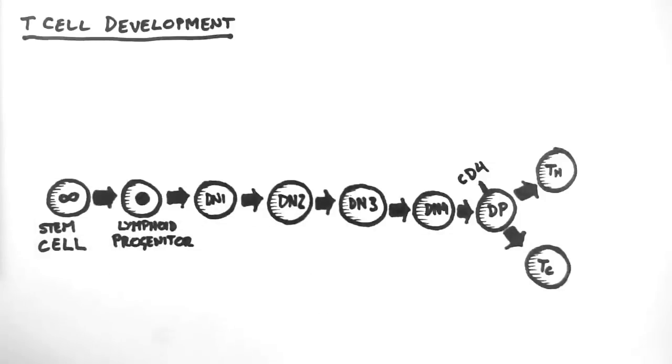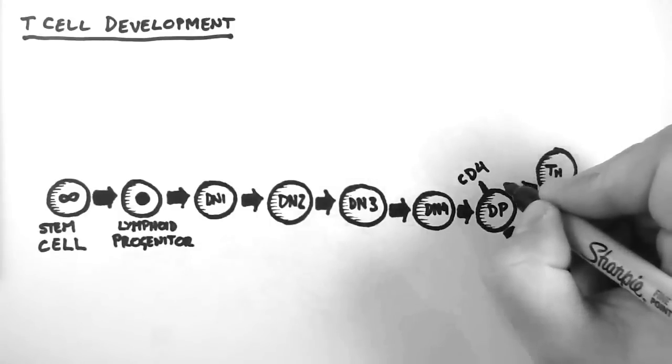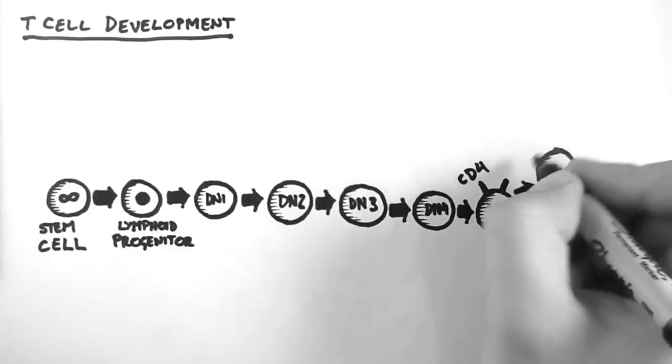Stages DN1 to 4 are called double negative because they express neither the CD4 glycoprotein nor the CD8 glycoprotein. That is to say, they are CD4 negative and CD8 negative.